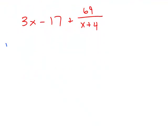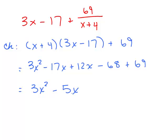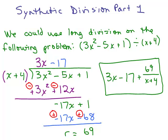Here's how we're going to check. You're going to take what you divided by times the quotient and add the remainder. Now keep in mind the remainder is 69 but the way we write the answer is 69 over x + 4. You just add 69. So we could do the FOIL method here: 3x² - 17x + 12x - 68 + 69, and if we add like terms we get 3x² - 5x + 1. And the question is, is that what we started with?